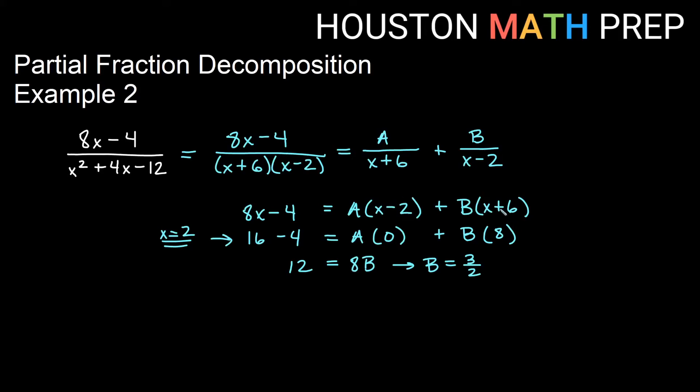So that is setting that factor equal to 0. Now let's set the x plus 6 factor equal to 0. So let's choose x equal to negative 6. And if we do that, we'll get, plugging in 8 times negative 6 will give us negative 48